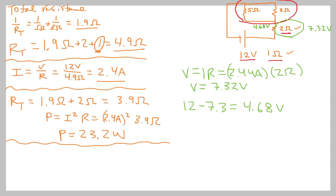So now knowing the voltage across the parallel branch, we can go ahead and solve for the current through each of the resistors. So if we want the current through the 5 ohm resistor, it's equal to 4.68 volts divided by 5 ohms, and that's equal to 0.936 amps. If we want I across the 3 ohm resistor, again it's 4.68 volts divided by 3 ohms, that's equal to 1.56 amps.